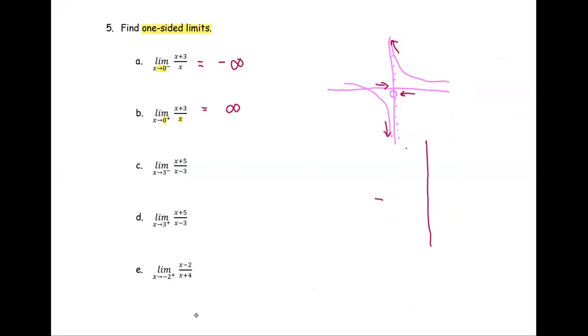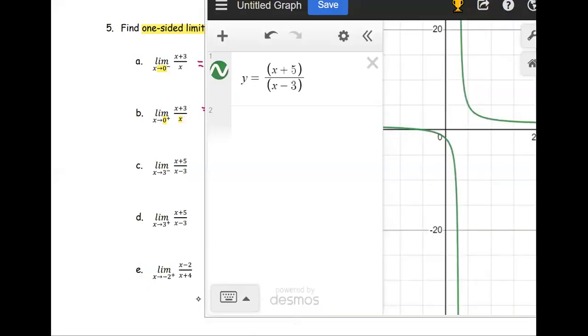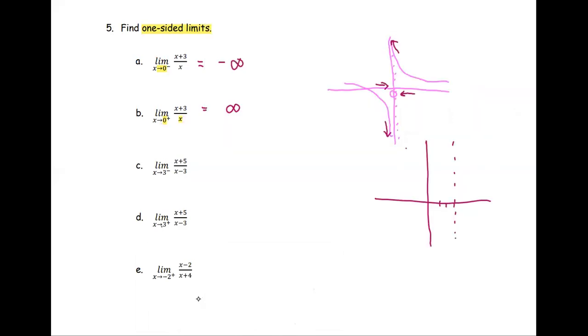The graph here. One, two, three. We have the vertical asymptote. And look at the graph one more time. Go down and then go up. Something like this. Similar to the previous graph.